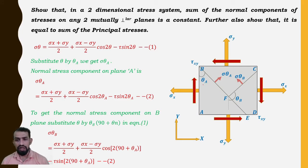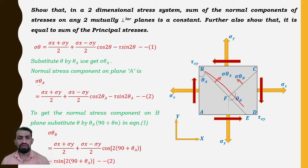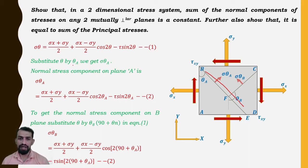Substituting θ = θ_a to get the normal stress component on plane A: σθ_a = (σx + σy)/2 + (σx − σy)/2 · cos(2θ_a) − τ·sin(2θ_a). This is equation number 2.